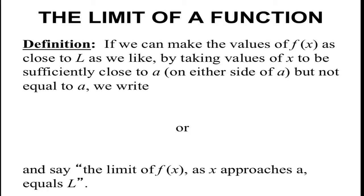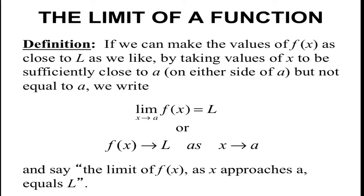The definition is: if we can make the values of f of x as close to L as we like by taking values of x to be sufficiently close to A on either side of A — meaning left and right — but not equal to A, we write the following. The limit as x approaches A of f of x equals L.